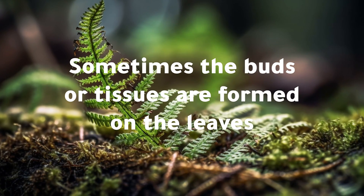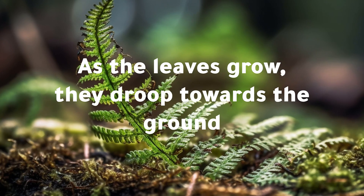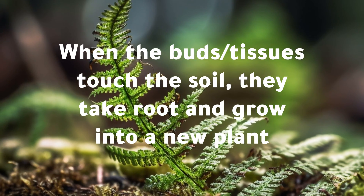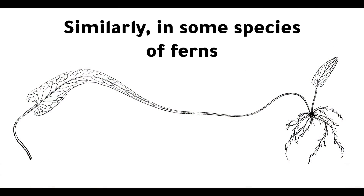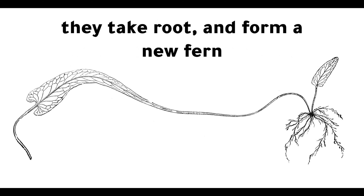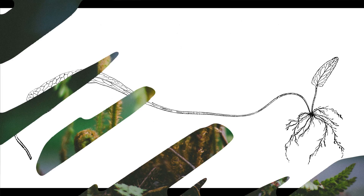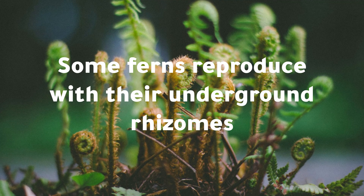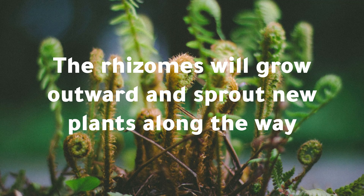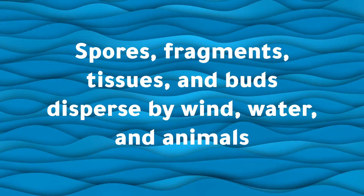Sometimes the buds or tissues are formed on the leaves. As the leaves grow, they droop towards the ground. When the buds or tissues touch the soil, they take root and grow into a new plant. Similarly, in some species of ferns, when the tips of the fronds droop and touch the soil, they take root and form a new fern — creating a walking effect. Some ferns reproduce with their underground rhizomes; the rhizomes will grow outward and sprout new plants along the way. Spores, fragments, tissues, and buds disperse by wind, water, and animals.